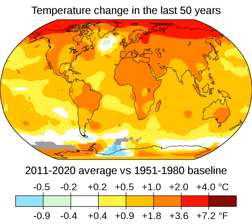Contemporary climate change includes both global warming caused by humans and its impacts on Earth's weather patterns. There have been previous periods of climate change, but the current changes are more rapid than any known events in Earth's history. The main cause is the emission of greenhouse gases, mostly carbon dioxide (CO2) and methane. Burning fossil fuels for energy use creates most of these emissions.